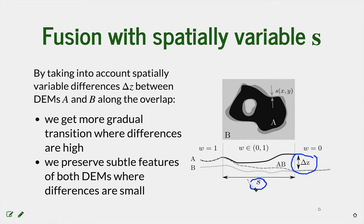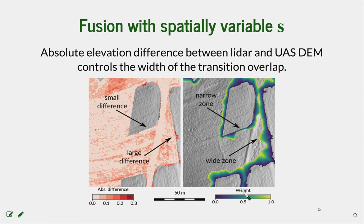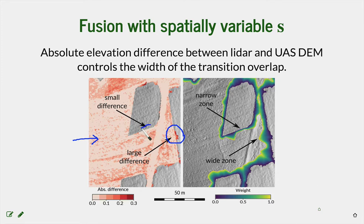This way we get a more gradual transition where differences are high and preserve subtle features of both DEMs. Looking at the absolute elevation differences between the DEMs to be patched — shown in the red area — the differences are spatially variable. For example, one location shows a difference of almost 30 centimeters, while others show differences within 3 to 4 centimeters. The width of the overlap is therefore variable, with larger overlap where the elevation difference is greater and smaller overlap where the difference is small.